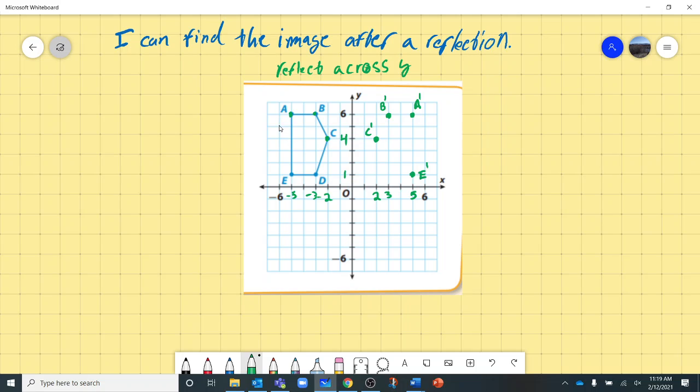And then D, our last point, is at X is negative 3. So X is negative 3, Y is 1. So our reflected point is going to be at positive 3, positive 1.